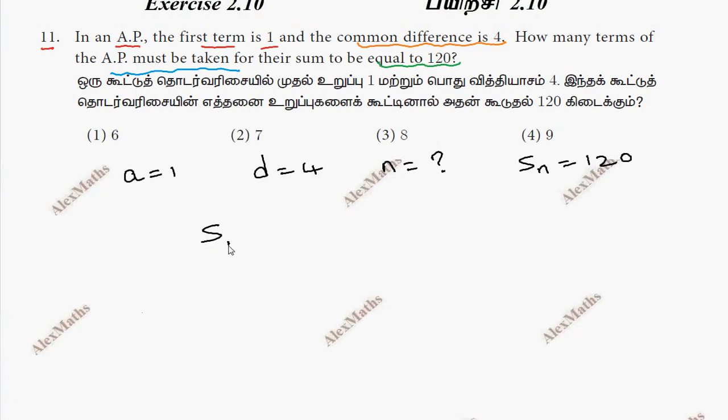Directly, we use the Sn formula and substitute the values. So Sn equals n by 2 into 2a plus n minus 1 into d.